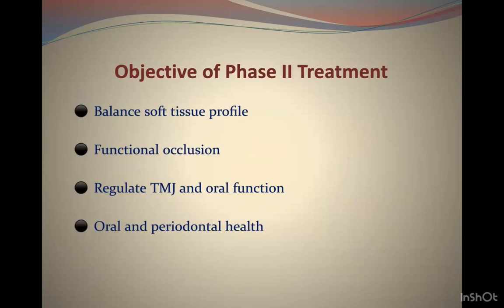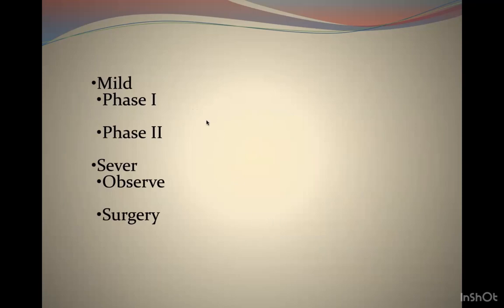Phase 2 objectives include balancing soft tissues, achieving functional occlusion, ensuring TMJ and oral function health, maintaining periodontal status, and correcting incisor inclination. For mild Class 3, phase 1 followed by phase 2 is appropriate. For severe Class 3 with the mandible clearly at fault, phase 1 is not indicated — these patients should be observed and treated later with orthodontics and surgical treatment.